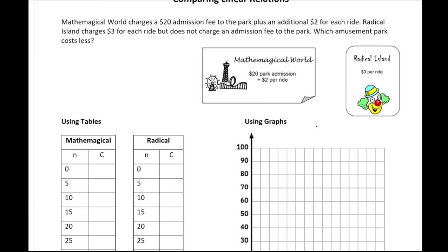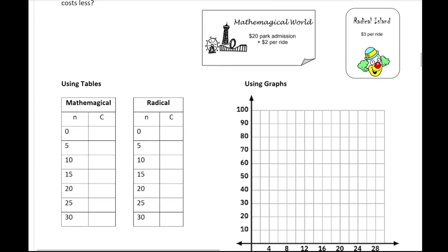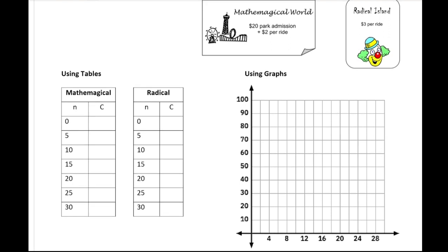We want to go through and look at all different scenarios — in this case, all different numbers of rides — to see if Radical Island is always going to be the cheapest, or if there are going to be different scenarios where one park is cheaper than the other. There are different ways we can go about looking at this: we can use tables, we can use graphs, and we're also going to look at using algebra.